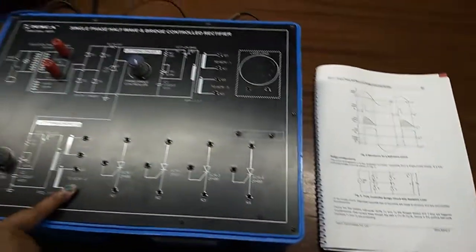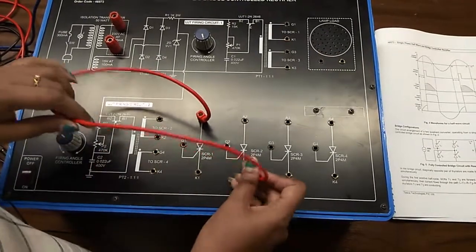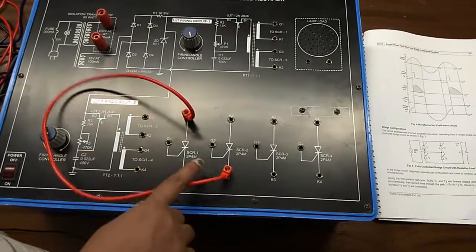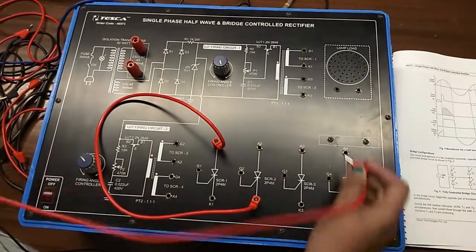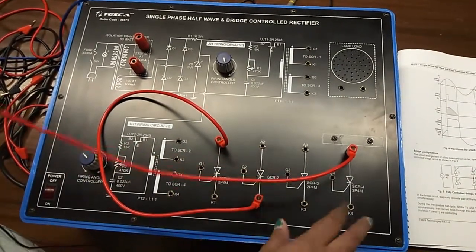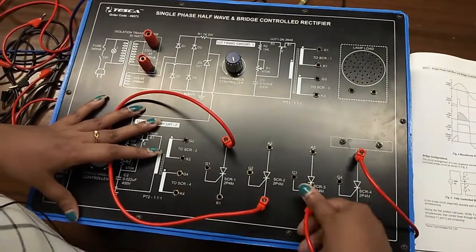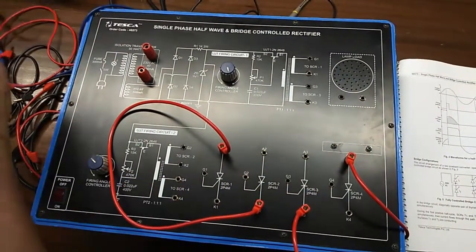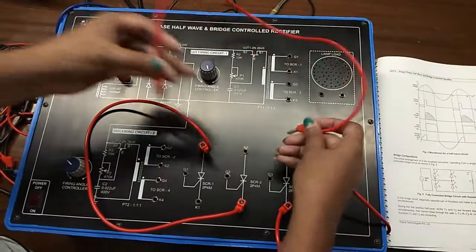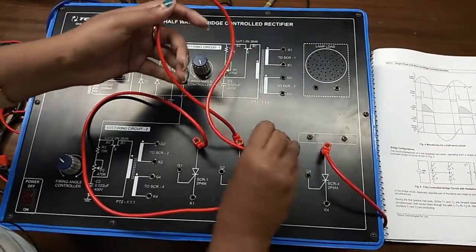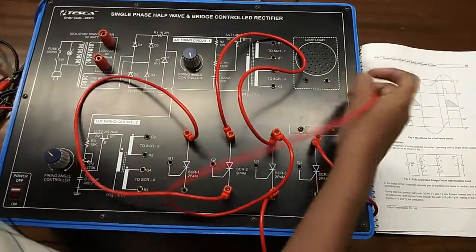First connect the anode of A1 with the cathode of second SCR and the anode of SCR 4, the cathode of third SCR, this one K3. Now, short these two A2 and A3 and this will be connected at the lamp load, this one is negative terminal.